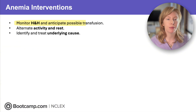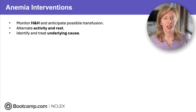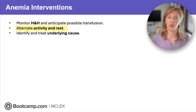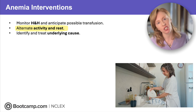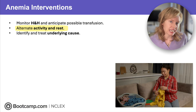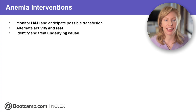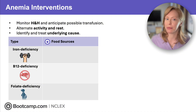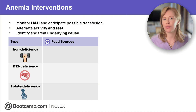For patients with anemia, we want to monitor their H&H and anticipate a possible transfusion if it gets too low or if there's acute blood loss. To manage fatigue, teach them to alternate activity and rest — for example, doing a standing chore like washing dishes followed by a seated task like folding laundry. You also want to identify and treat the underlying cause, and on the NCLEX this means knowing which foods to encourage them to eat to address their specific kind of anemia.